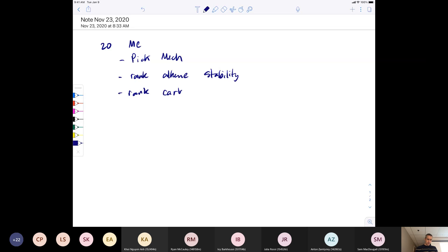Rank carbocation stability. Maybe identifying solvents as polar aprotic, polar protic, or nonpolar. Identifying which mechanism goes best with which solvent. SN2 is best with polar aprotic, SN1 polar protic. Leaving group ability, which carbocations can rearrange, maybe a question like that.